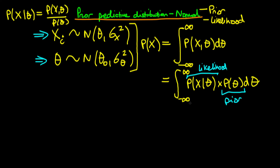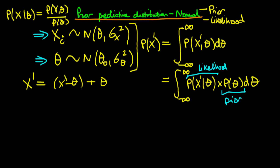It turns out there is actually a much simpler way to go about this, and it involves a bit of a trick. What we actually do here is note that we could trivially rewrite x — let's call it x primed, our new observation — as x primed equals (x primed minus theta) plus theta. That's trivially true because the thetas just cancel one another out.